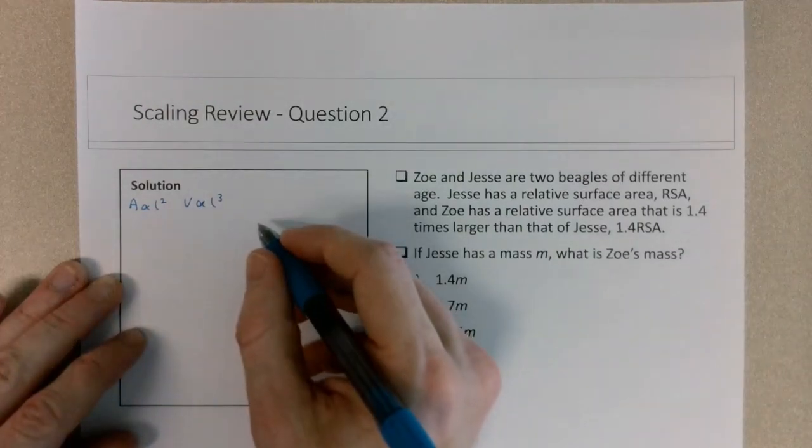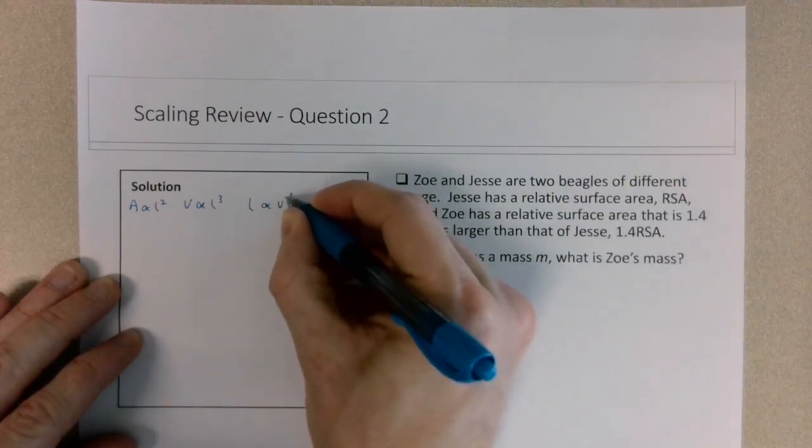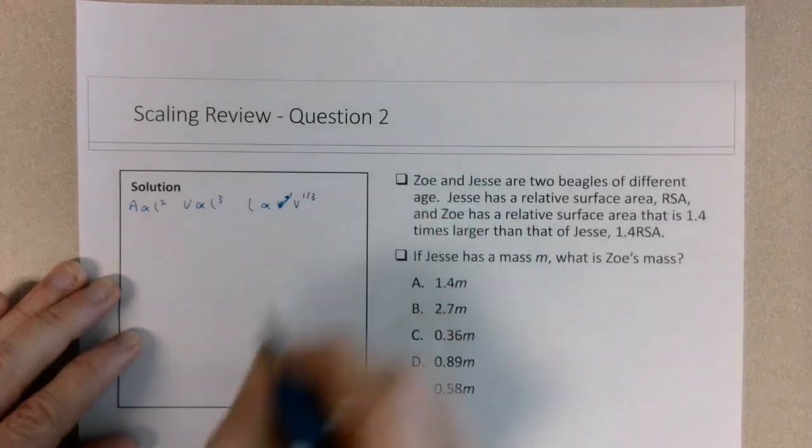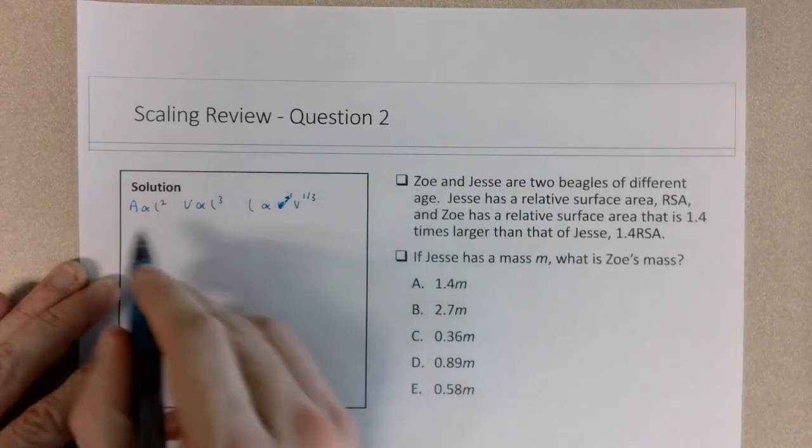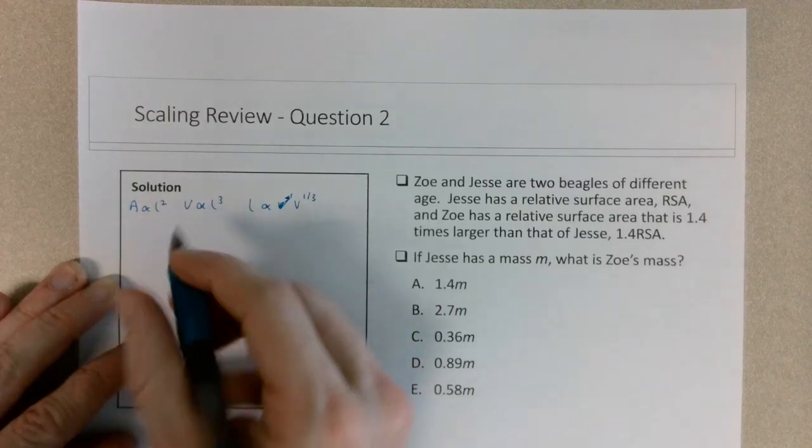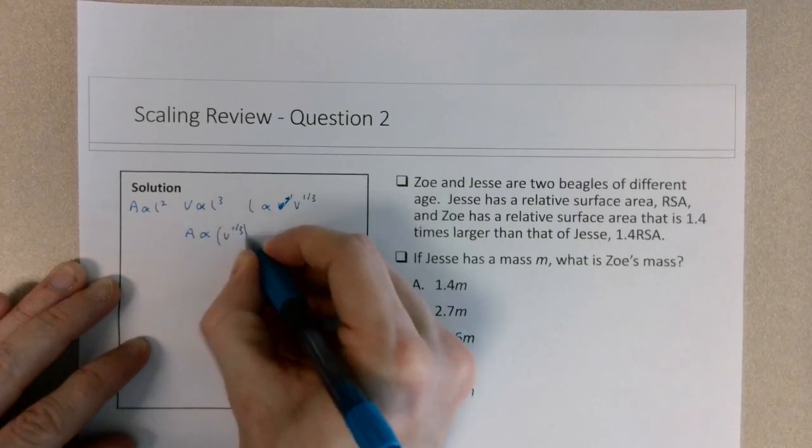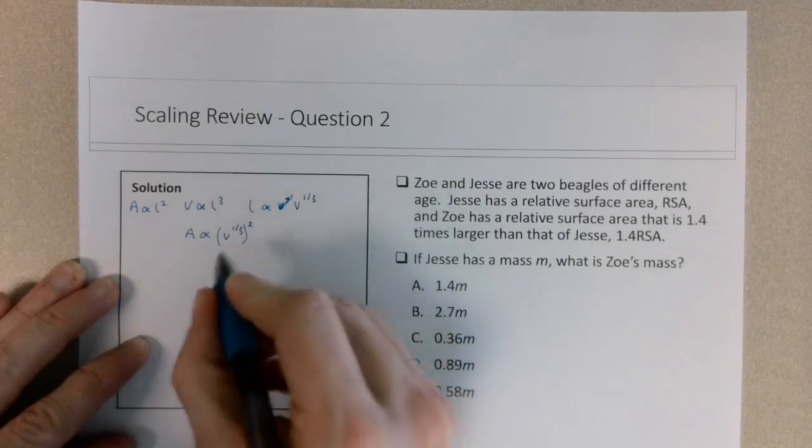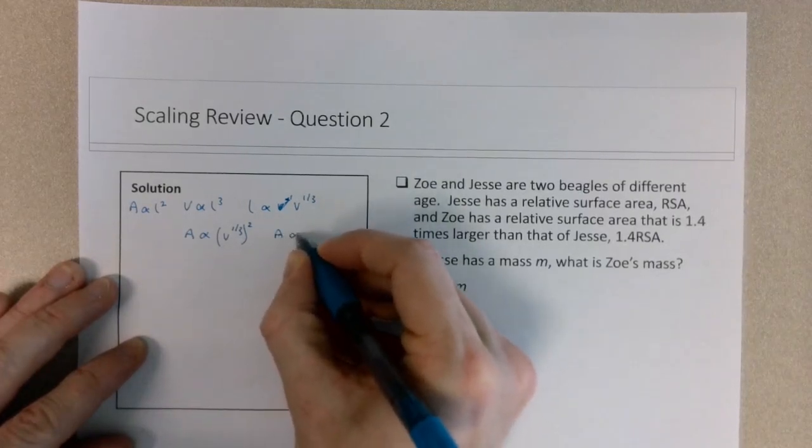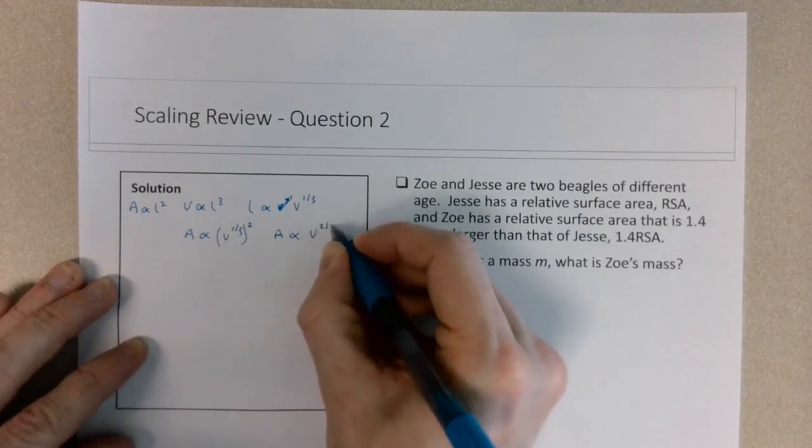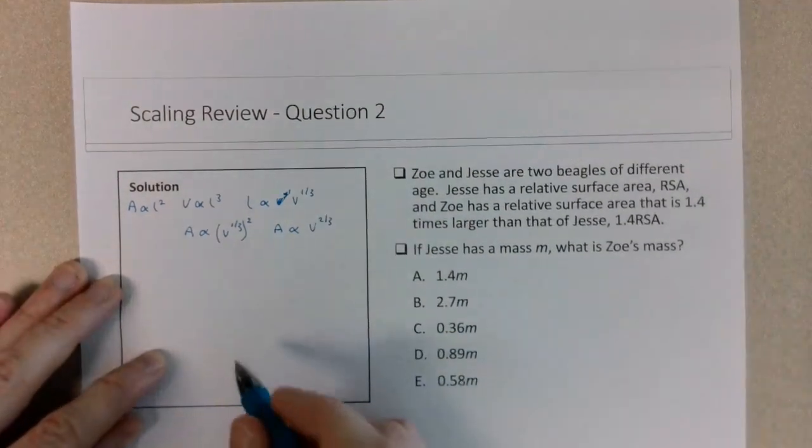So we can say that L scales with volume to the one-third power. And then I can replace this volume to the one-third power into this expression for area proportional to L squared. So that means that area is proportional to volume to the one-third, replacing the L. Then I multiply these two exponents. So I can state that the area scales with volume to the two-thirds power, which means that volume scales with area to the three halves, but that's for another problem.